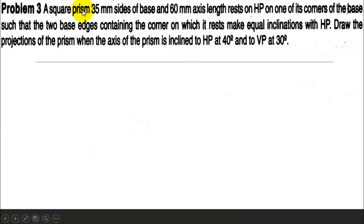Learn CAD in 1 minute. A square prism 35 mm side of base and 60 mm axis length rests on HP on one of its corners of the base.